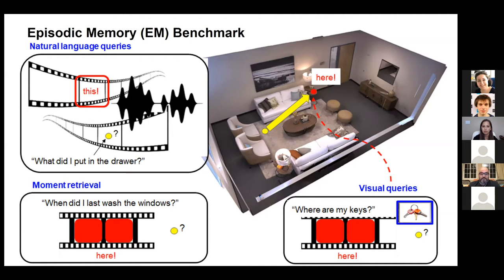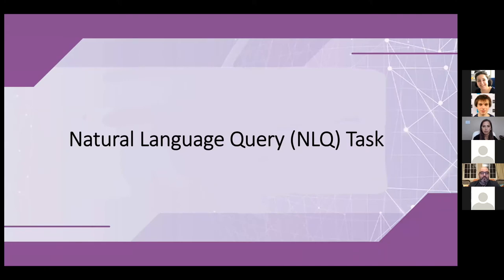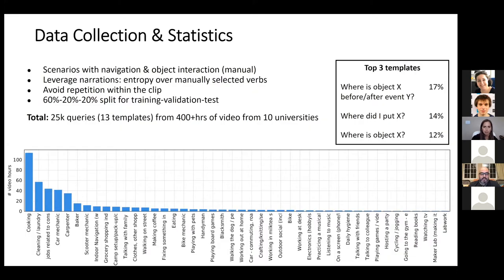Let's dive into the natural language query (NLQ) task. The input is a language query and a long video episode, and the goal is to retrieve the beginning and end of the video segment that answers the query. We focused on scenarios containing a lot of navigation and object interactions, manually filtered from the larger set, and selected interesting verbs based on entropy in the narrations to avoid repetitions within clips.